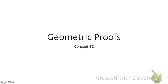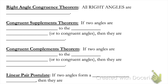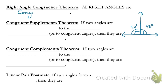The first one we're going to talk about is the right angle congruence theorem. If we draw out two right angles — remember, right angles are 90 degrees — both of them have to be 90 degrees, so the angles have the same measure. This means those angles are going to be congruent, and this is true for all right angles. So all right angles must be congruent.